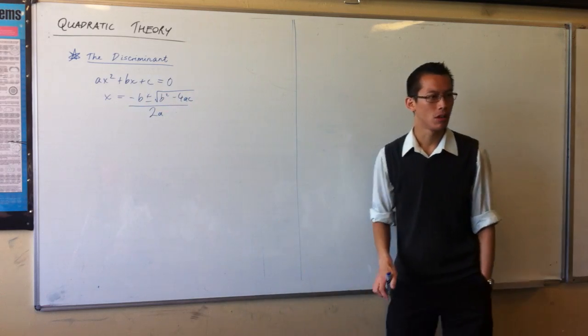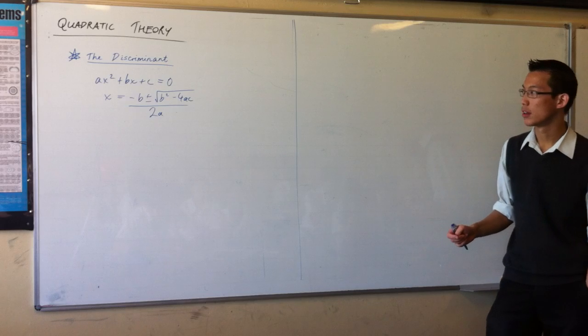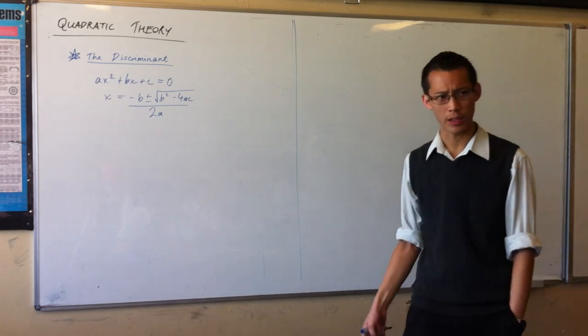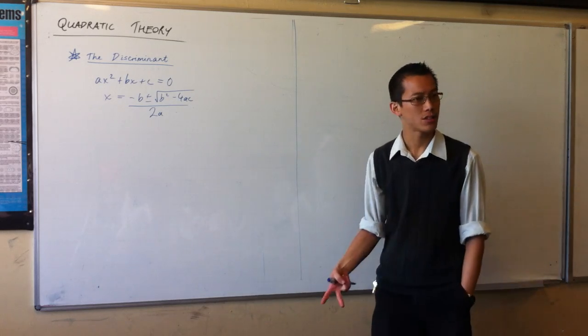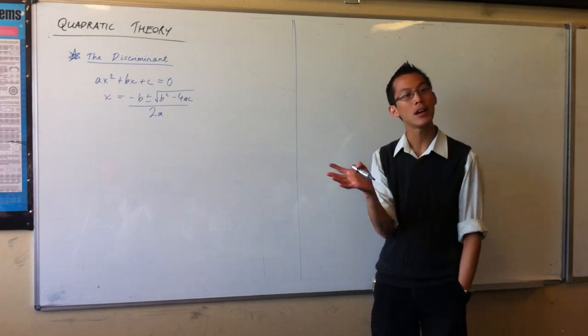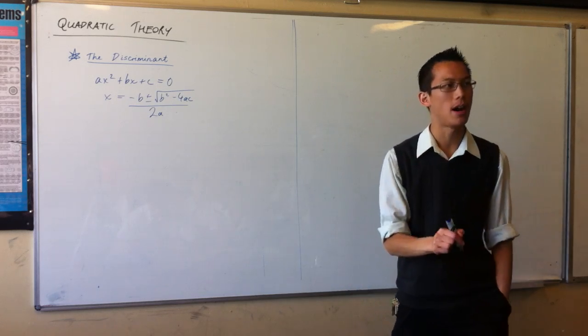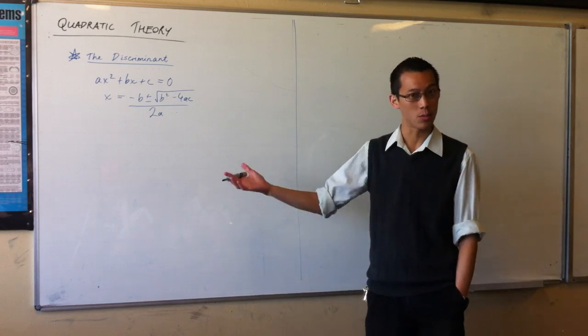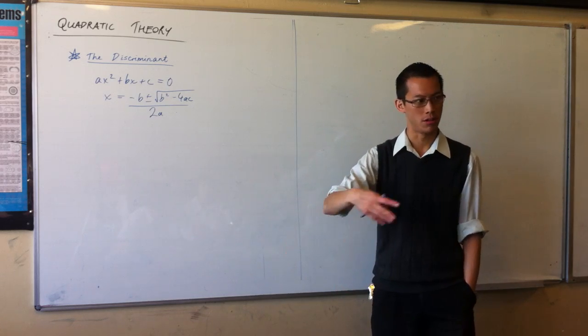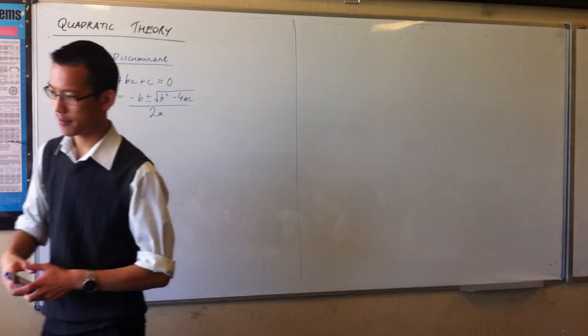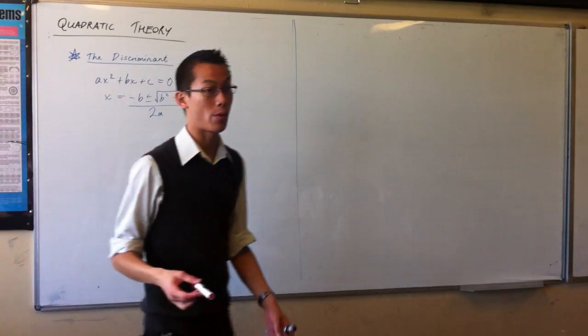Now, this equation will tell you the roots of the equation. And for quadratics, we expect two, but there aren't always two. There might be one or there might be none. Now, you can see the important part of this equation, the part that tells you whether there's two or one or none, is this part that's sitting underneath the square root sign.